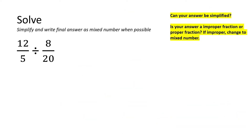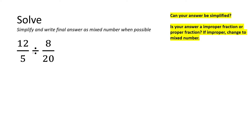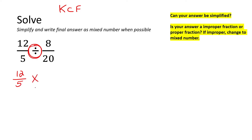For the rest of this lesson we're just going to practice a couple more. We're also going to have some with mixed numbers and some that have negatives in them. So as soon as you see a divide sign, remember K, C, F: keep the first one the same, change the divide to a multiply, and then flip the second fraction upside down.